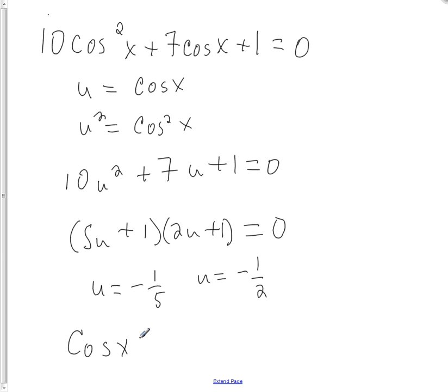So I'm looking for where values of x is the cosine equal to negative 1 fifth. And what values of x is cosine equal to negative 1 half.